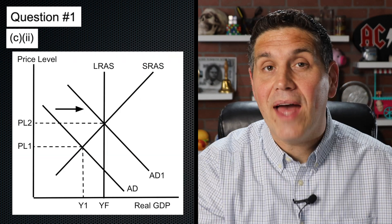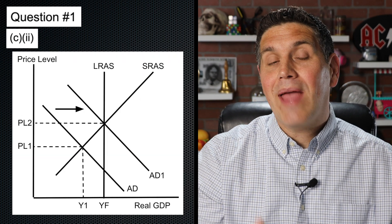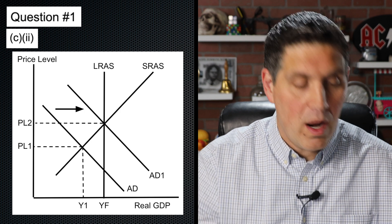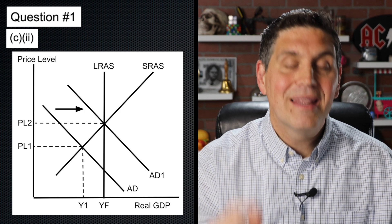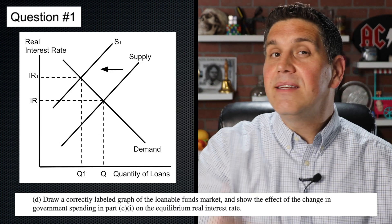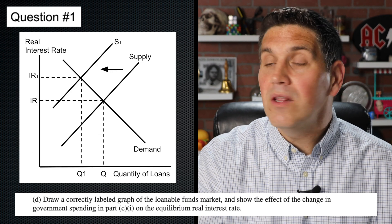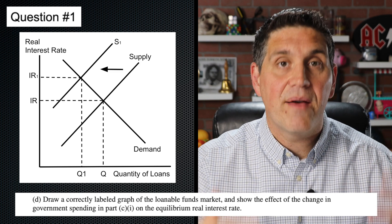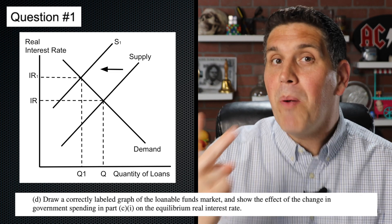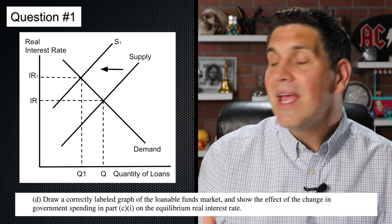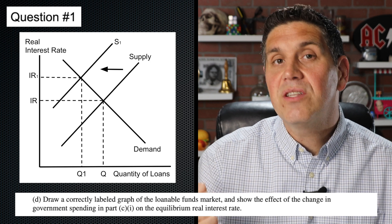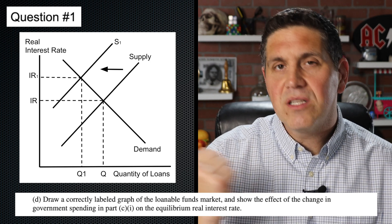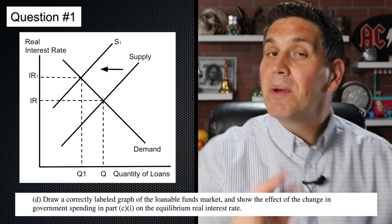And in C2, you had to show that shift — showing aggregate demand shift to the right, price level going up, quantity going up, labeling this PL2. In D, it asks you to draw the loanable funds market and show what's going to happen when there's an increase in deficit spending. The answer is two possible answers: either it's an increase in demand or a decrease in supply. I'm doing a decrease in supply, but either one of those would have actually worked. But to get the point, you had to make sure to draw and label the entire graph correctly.